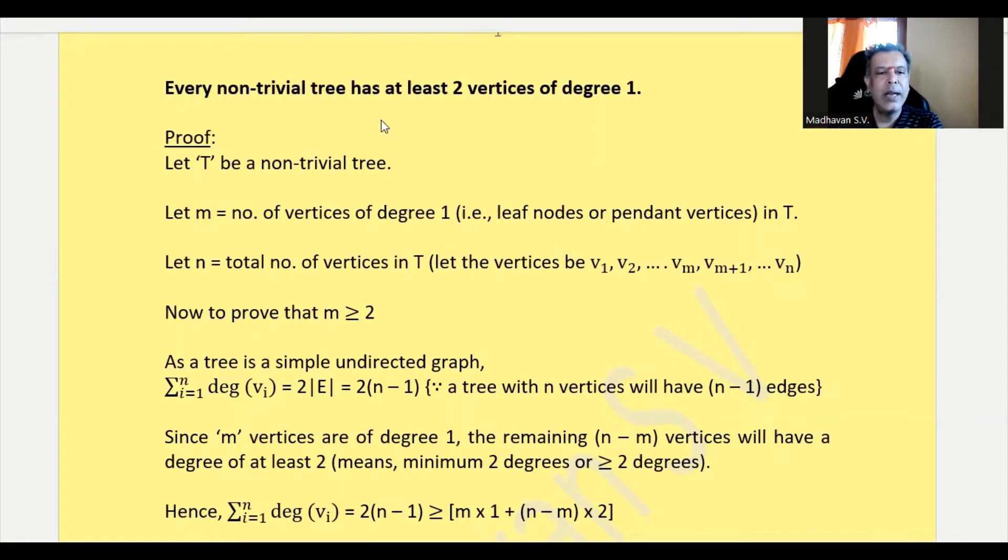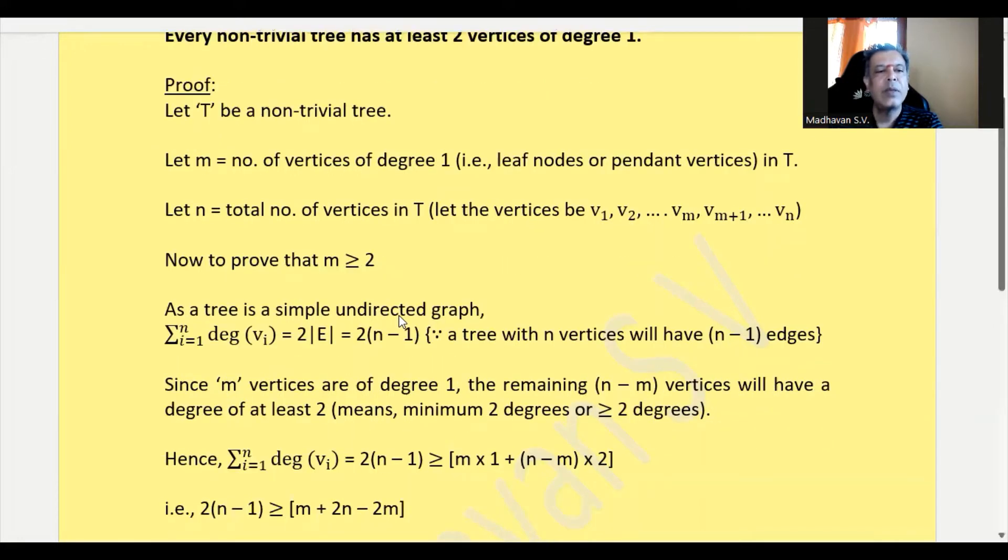Since we need to prove at least two vertices of degree 1 exist, we must prove that m ≥ 2. Since this tree is a simple undirected graph, we know that the sum of degrees of all vertices is twice the number of edges.